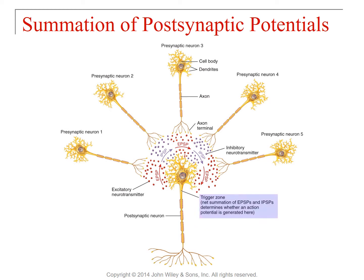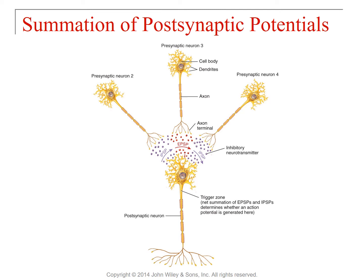Now let's take excitatory neurons 1 and 5 away. With more inhibitory signal than excitatory signal and just these three neurons firing, you would more than likely get inhibition of an action potential — it would be more difficult to start an action potential in the postsynaptic neuron. The number of neurotransmitters released matters, and the location of the neurotransmitters released matters — it's like real estate: location matters.